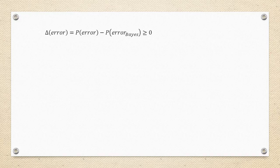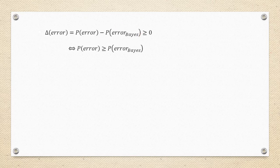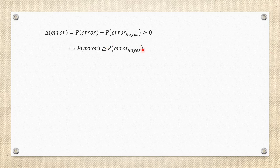Since our delta error — the difference between the arbitrary rule's error and the Bayes error — is greater than or equal to zero, that means the arbitrary decision rule always has error greater than or equal to the Bayes decision rule's error. It doesn't matter how carefully we choose the arbitrary rule; the best we can do is the Bayes error rate. This proves that the Bayes decision rule is optimal under the assumptions embedded in the axioms of probability and the definitions of our random variables and sets.